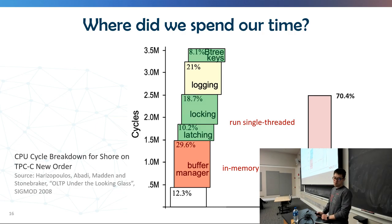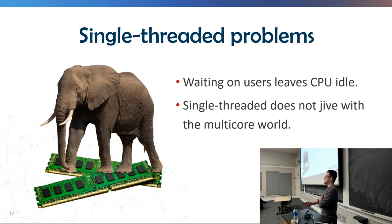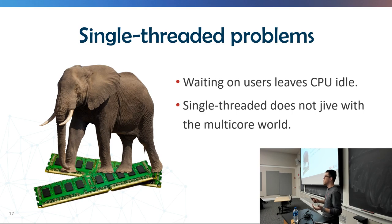We've found a way out of the concurrency problem, but there are two remaining issues. The first is that waiting on users leaves the CPU idle. If you support external transaction control — where you tell the system to start a transaction, run queries, get results, and then decide whether to commit or abort — you can't really run single-threaded because you end up waiting on users to respond, spending a lot of network round-trip time. The other issue is that multi-core is now ubiquitous. If you have a system like VoltDB that does distributed transactions, you don't want it to run entirely single-threaded — you need to utilize all the cores.